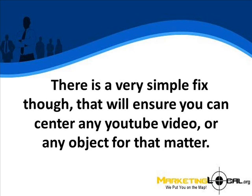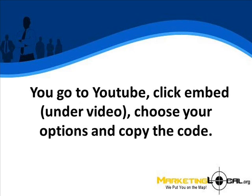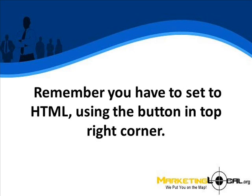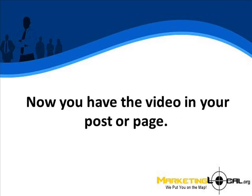There is a very simple fix, though, that will ensure you can center any YouTube video, or any object for that matter. First, you have to get the video into your post. You go to YouTube, click Embed — which is under the video — choose your options, and copy the embed code. You then take that code and paste it into the WordPress HTML editor. Remember, you have to set to HTML using the button in the top right corner of your posting window. Then you simply paste in your YouTube embed code. Now you have the video in your post or page.